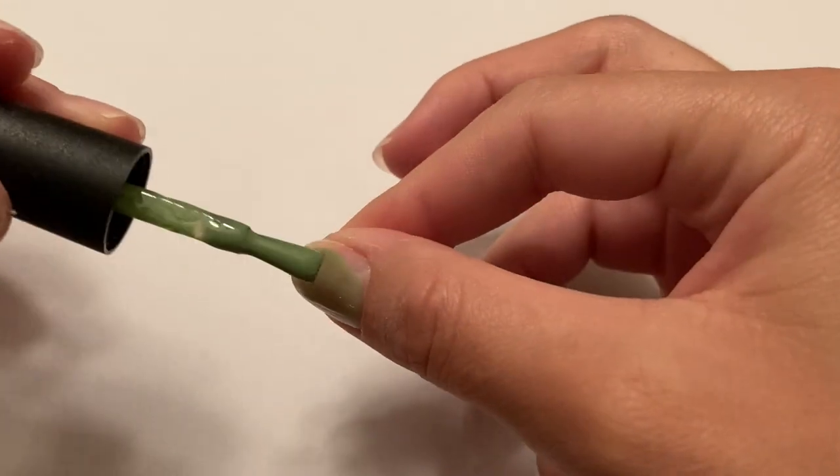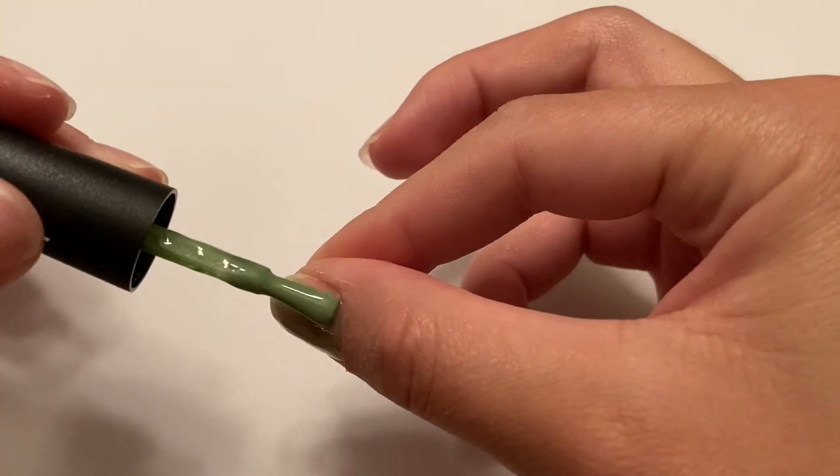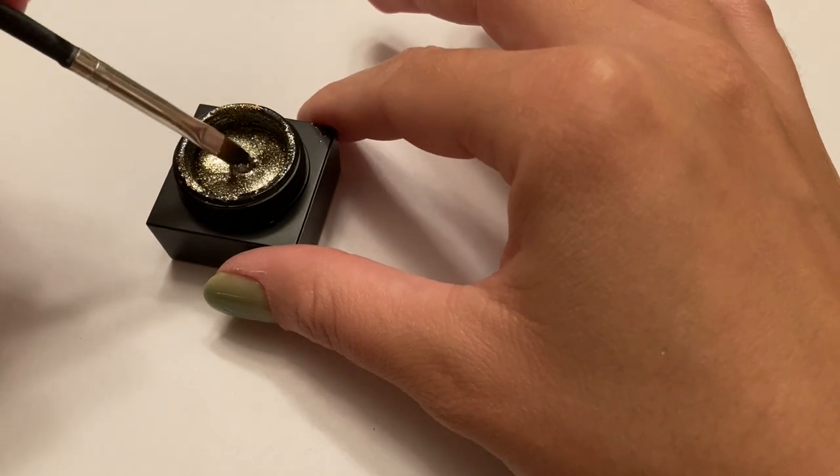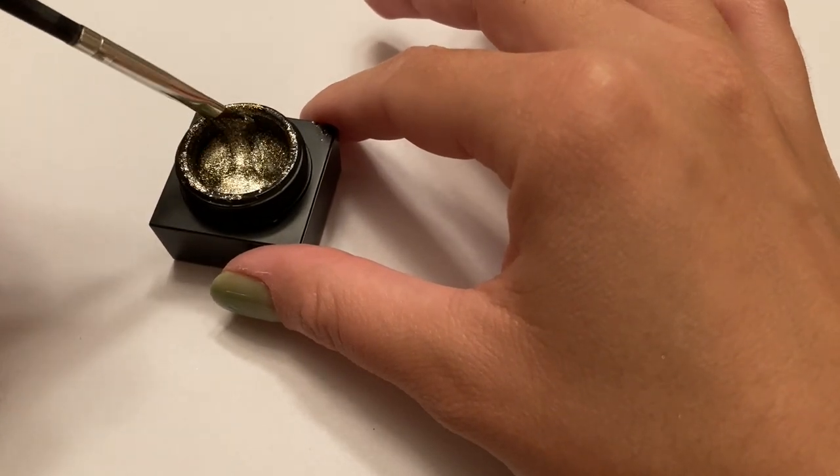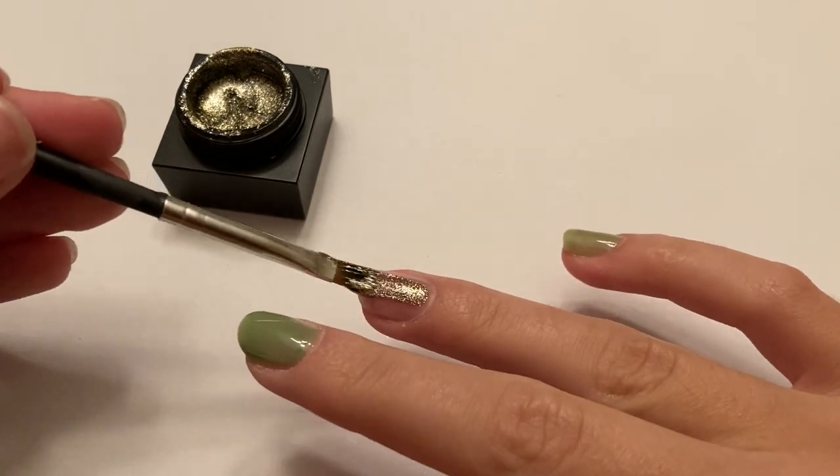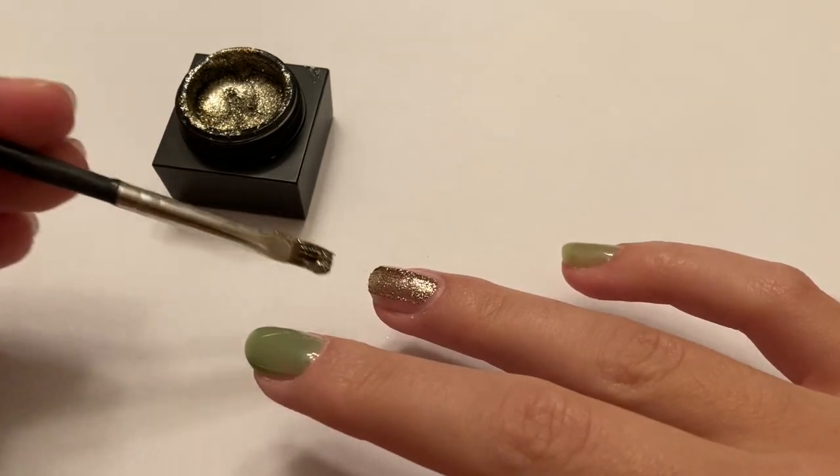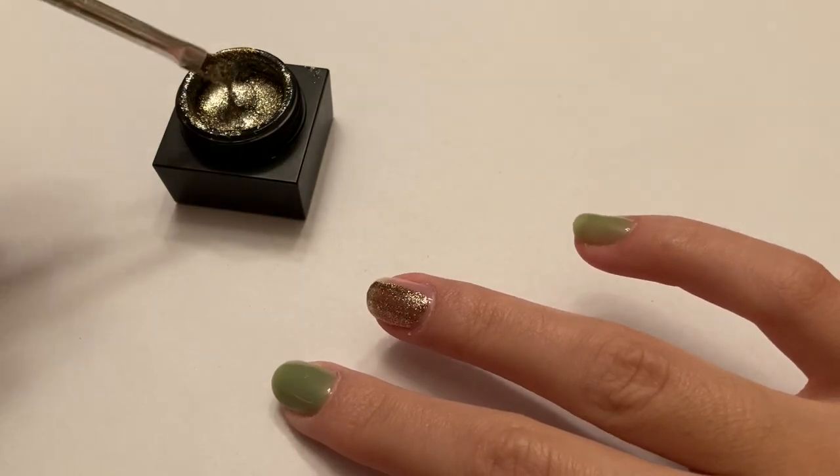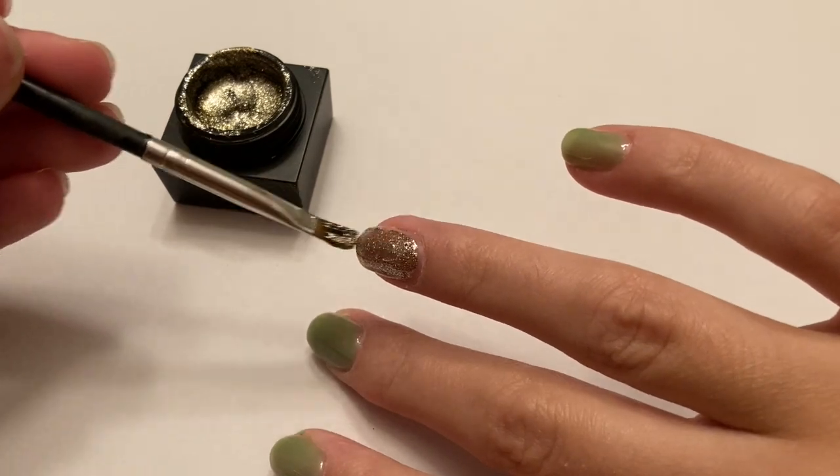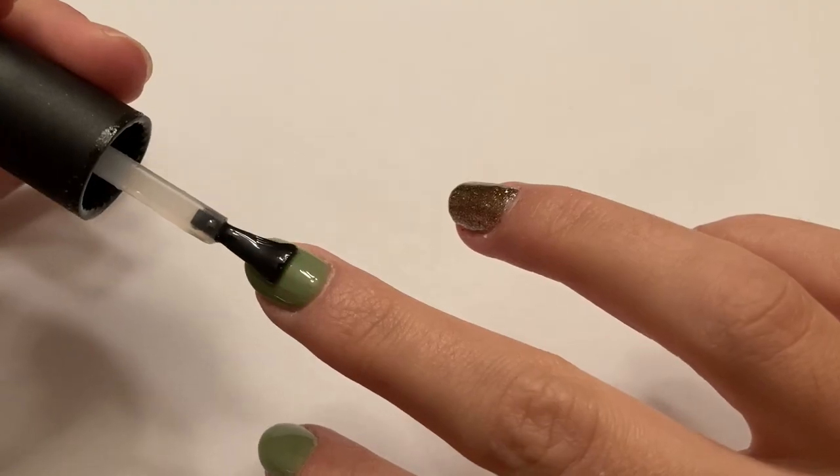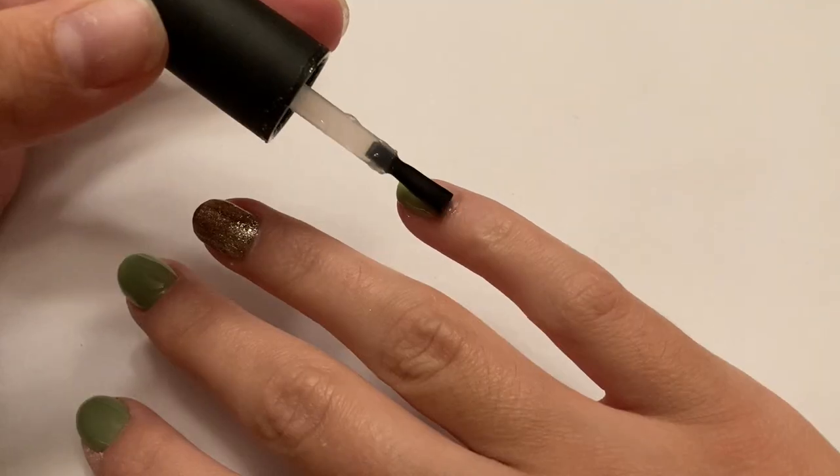For all of my nails except for my ring finger, I chose this glittery gold gel polish, and ended up doing two coats of the gel polish colors. And then applied my top coat and some cuticle oil.